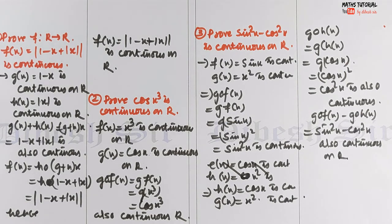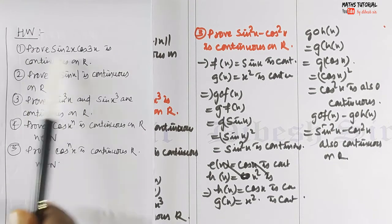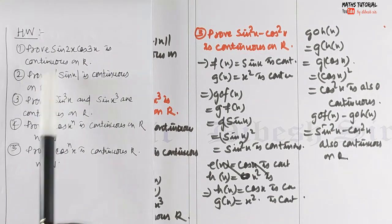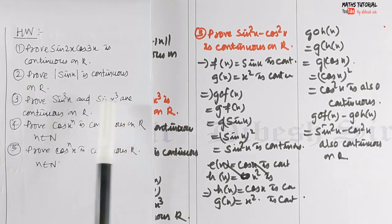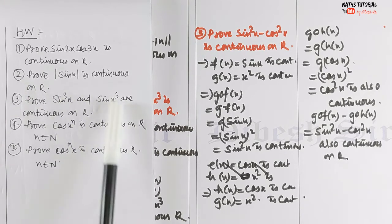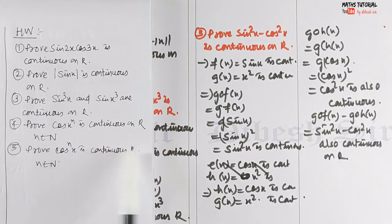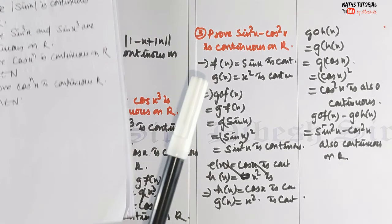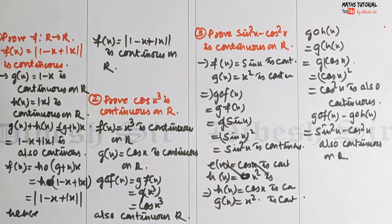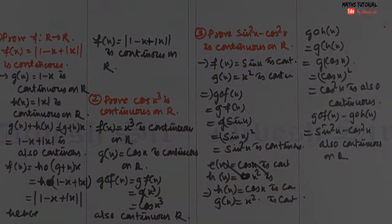Here are some practice questions: Prove sin(2x)·cos(3x) is continuous on R. Prove |sin x| is continuous on R. Prove sin(x³) and sin³x are continuous on R. Prove cos^n(x) is continuous on R. Prove cos(nˣ) is continuous on R. Solve these questions for practice and also do the NCERT exercises for more clarity. Thanks for joining our class — do like, share, and subscribe to my channel, and don't forget to hit the bell icon for notifications on new videos. Thank you.